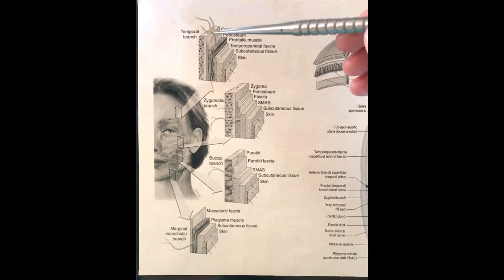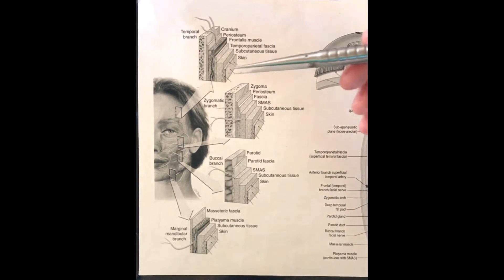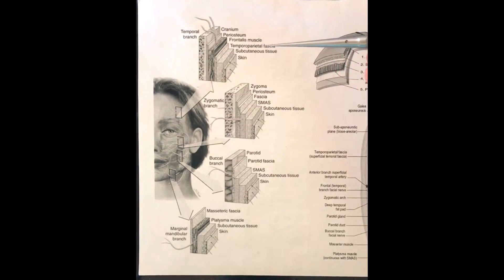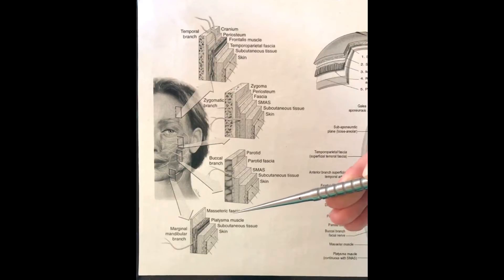The layers of the face are concentrically arranged, meaning the layers from the forehead through the mid-face and down to the neck are all essentially similar but just have different names — and that is the confusing part. For example, the temporoparietal fascia is the musculo-aponeurotic layer in the temporal region, which continues down into the mid-face as the SMAS, or superficial musculo-aponeurotic system, and continues further down to the platysma and its respective fascia.